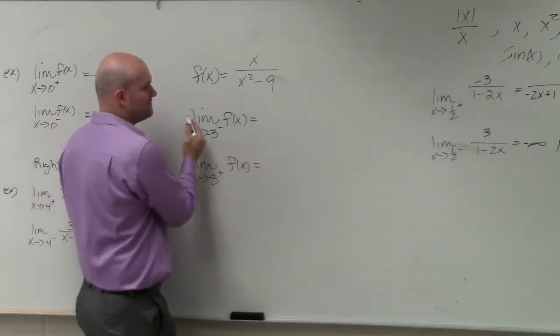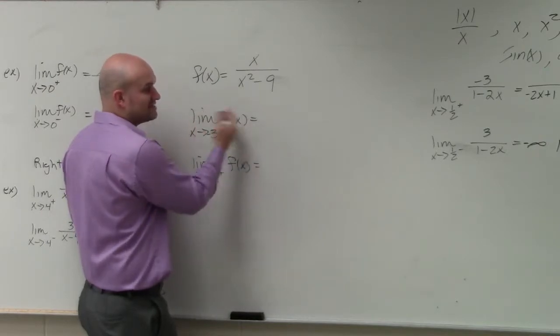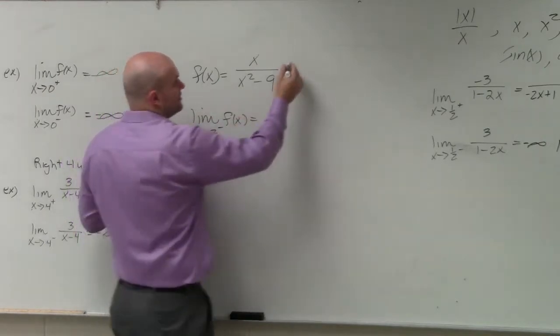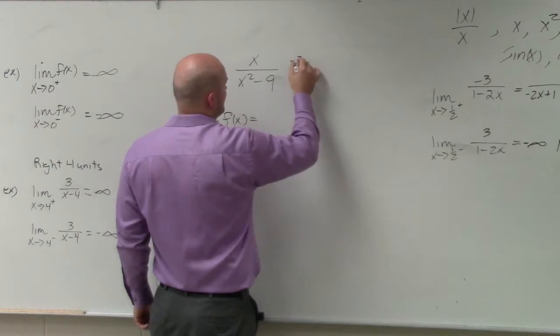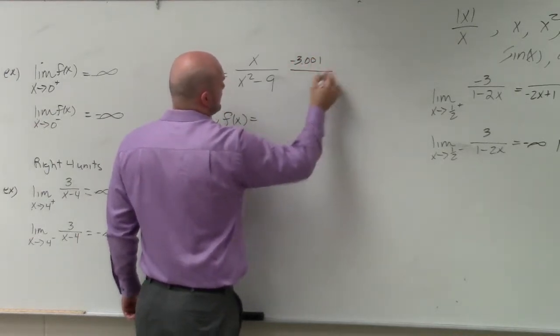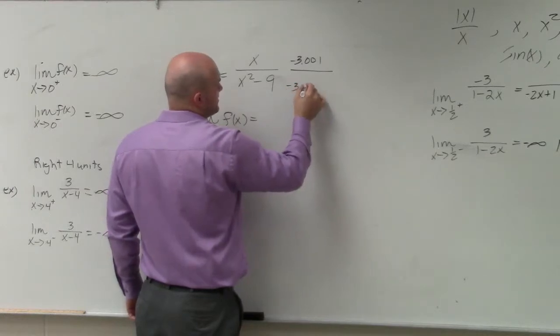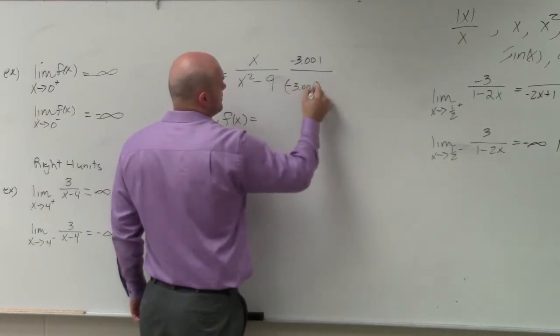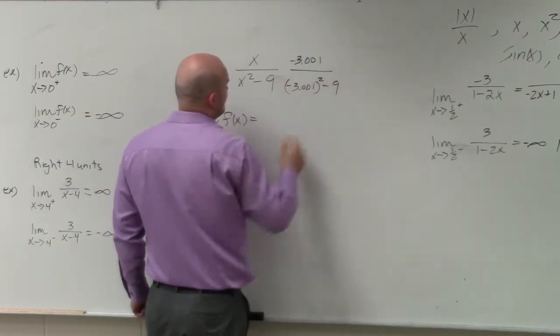So from the left-hand side, we need to pick a value that's more negative than negative 3. So if I plugged in negative 3.001, then negative 3.001 squared minus 9.